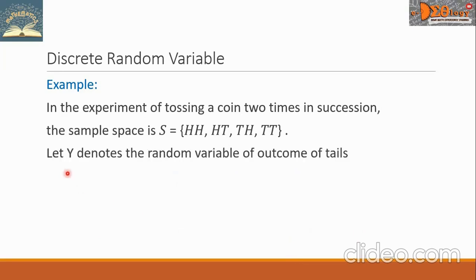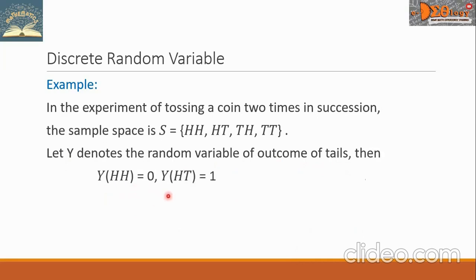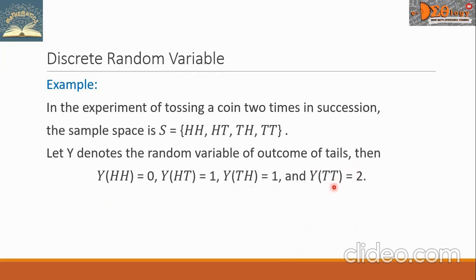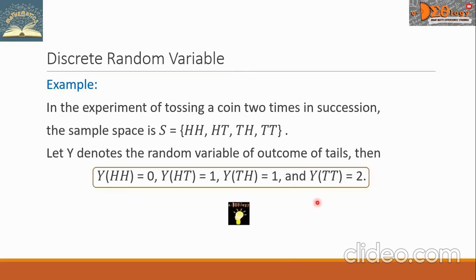Let's have another random variable Y. Let Y denote the random variable of outcome of tails. So we write Y(HH) = 0, Y(HT) = 1, Y(TH) = 1, and Y(TT) = 2. This is the final answer.